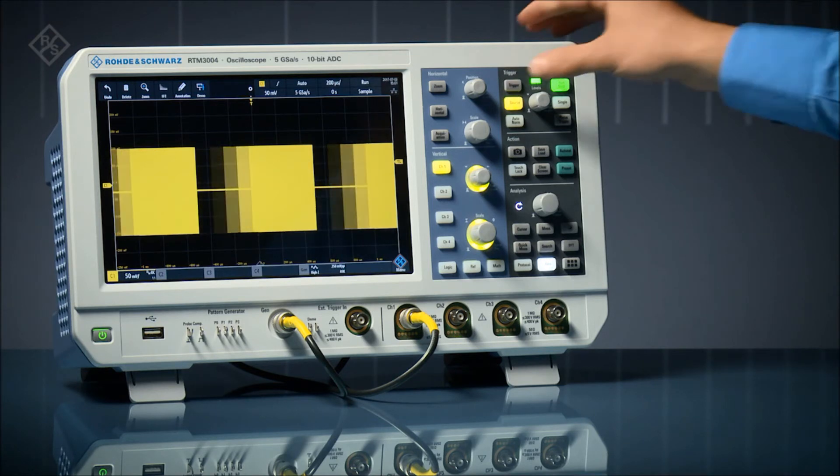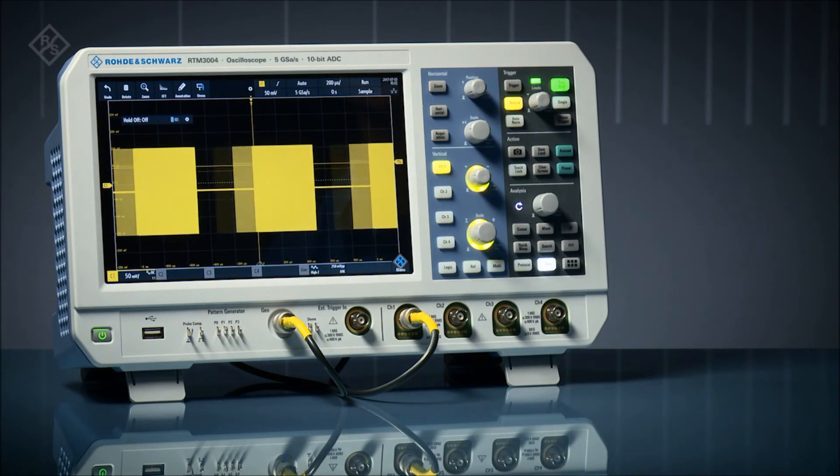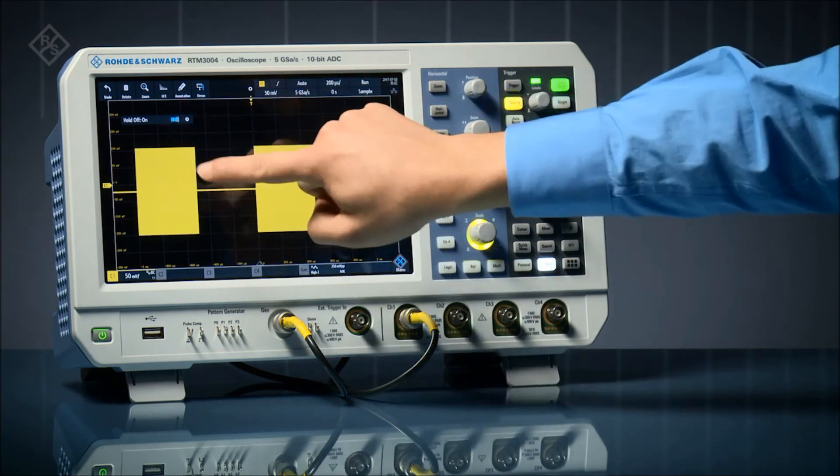Quick access lets you drag any menu item, in this example trigger holdoff, directly onto the main display. Use the quick access field to enable it.